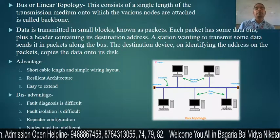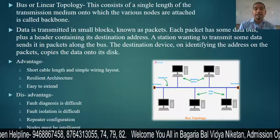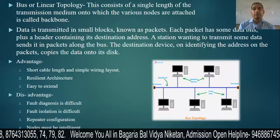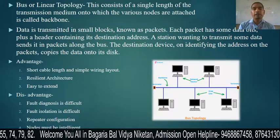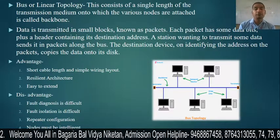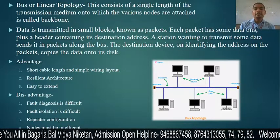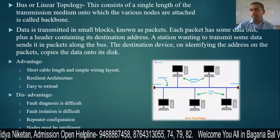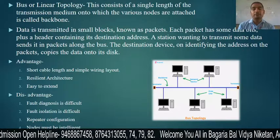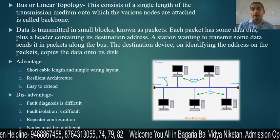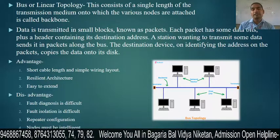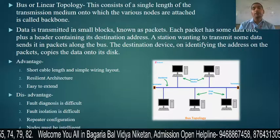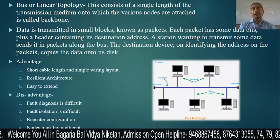The advantages of bus topology are: short cable length and simple wiring layout — the cable length is very low and installation is very easy, making it a very traditional method. Most LAN networks were made on this topology because installation is very easy. Next is resilient architecture — the architecture is flexible, meaning you can add a number of nodes easily. Next is easy to extend — if your architecture is reliable and flexible, you can extend it easily.